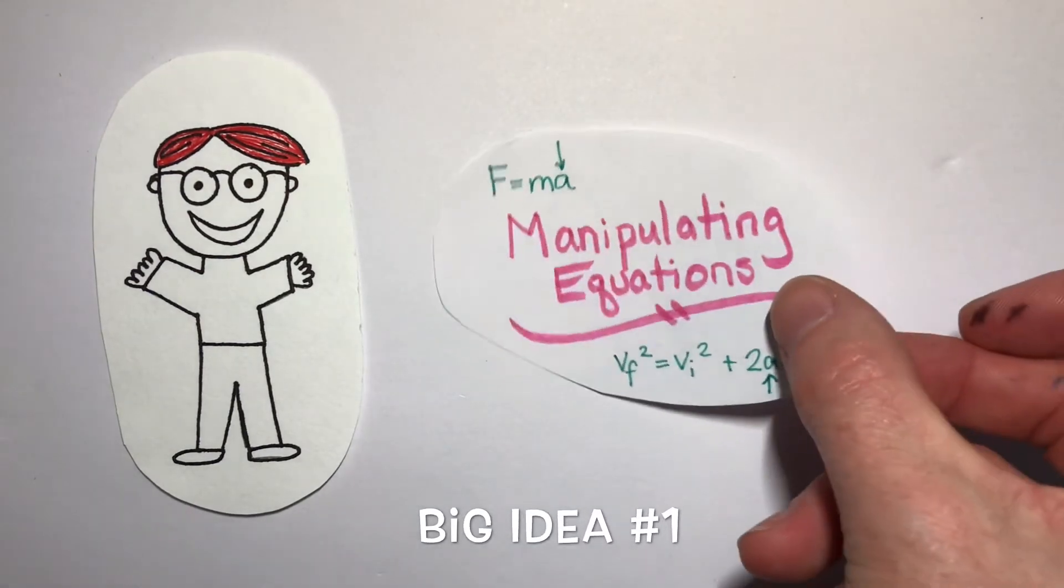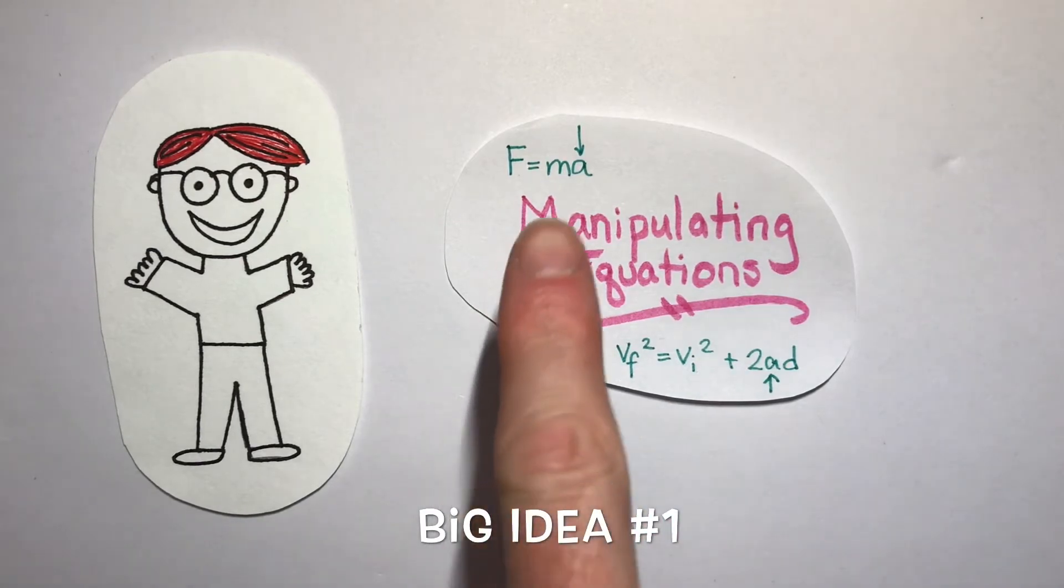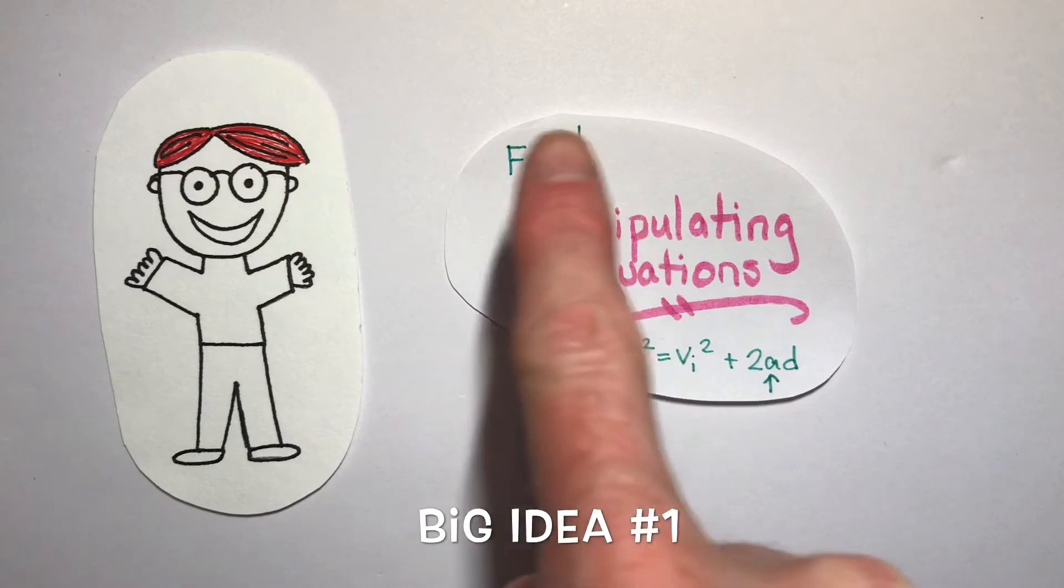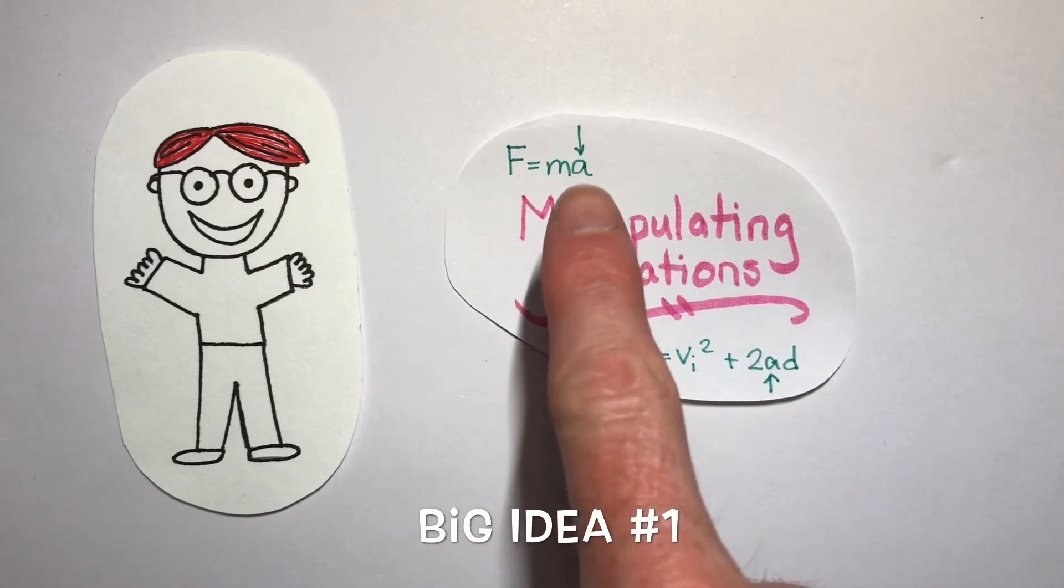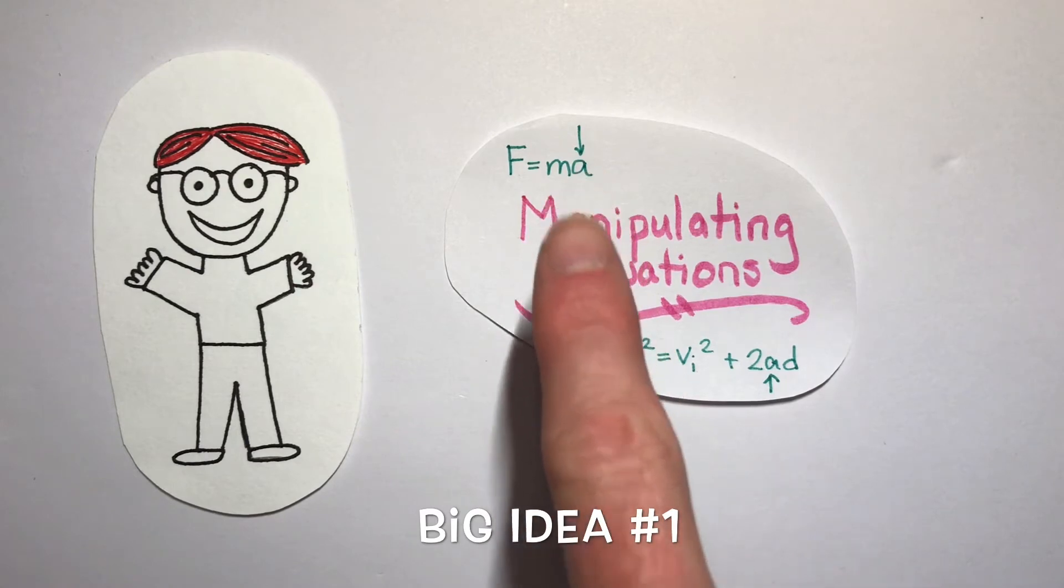Our first big idea is manipulating equations. Algebra is an essential component of physics, so we'll need to develop the skills necessary to rearrange formulas quite a bit in order to be successful with all the physics problems. For example, if we consider force equals mass times acceleration, it might be necessary to rearrange to solve for acceleration. That is one type of manipulating equations.